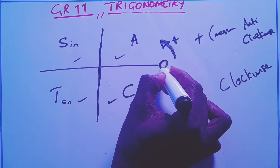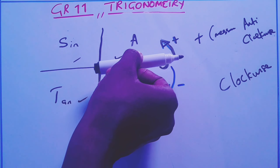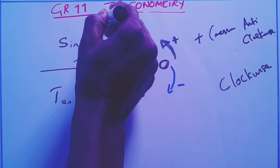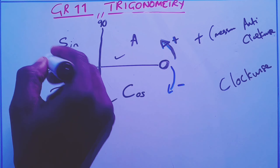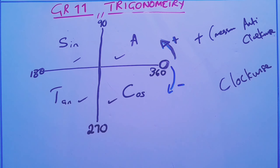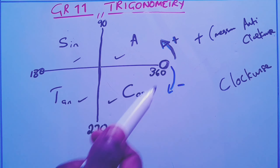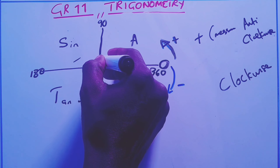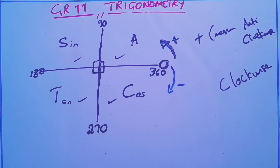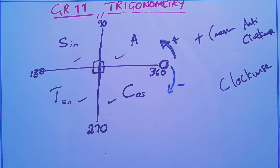Our angles start at zero degrees on the right-hand side. Moving anti-clockwise, we reach 90 degrees at the top, 180 degrees on the left, 270 degrees at the bottom, and back to 360 degrees. The difference between each axis is 90 degrees throughout the Cartesian plane.